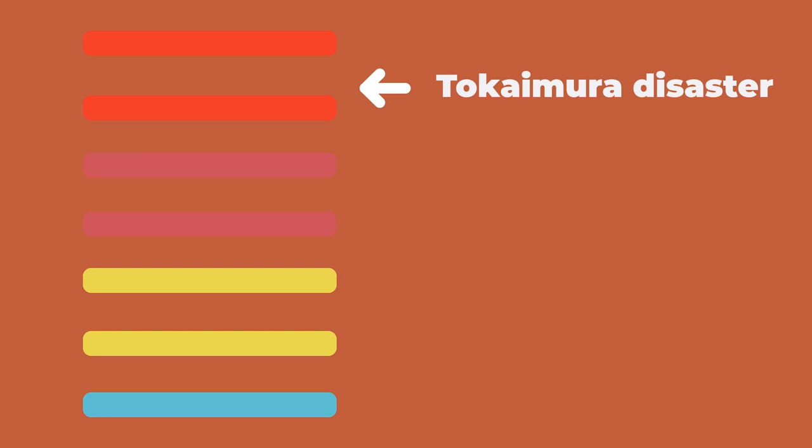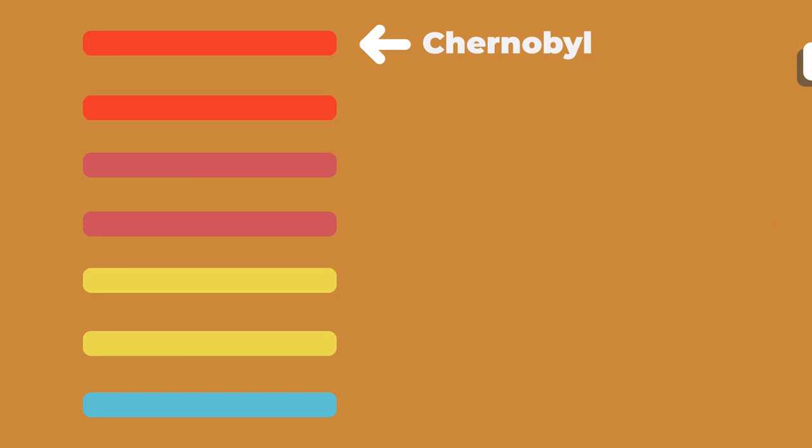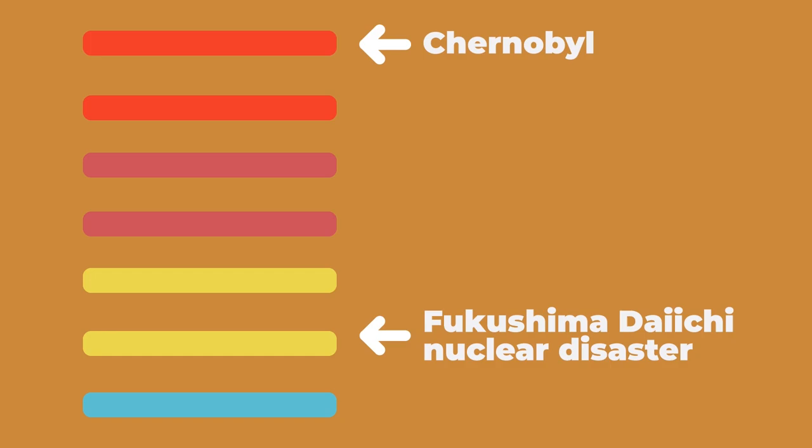The Tokaimura accident remained Japan's largest nuclear-related accident for 12 years. Then, in 2011, it was replaced by the accident at the Fukushima 1 nuclear power plant, which became the most destructive and dangerous disaster in the history of Japanese nuclear power. Like Chernobyl, the Fukushima accident received a Level 7 INES rating.